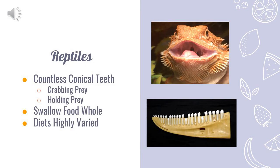Reptiles tend to have countless conical teeth, meant more for grabbing than anything discussed before. Most are carnivorous or omnivorous, and tend to swallow their food whole. Reptiles are a very large group of animals, and so there is a lot of variety in what they can eat.